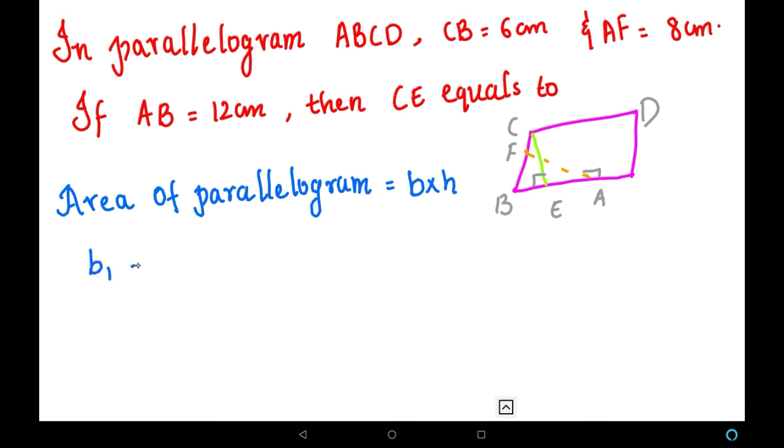So let us take B1 as CB, that is nothing but 6 centimeters, and H1 as AF, that is 8 centimeters. Now we have to find the value of CE. For that, let us take the another base. Let us take these values: B2, that is AB, 12 centimeters, and this H2 value as CE, which we are going to find.